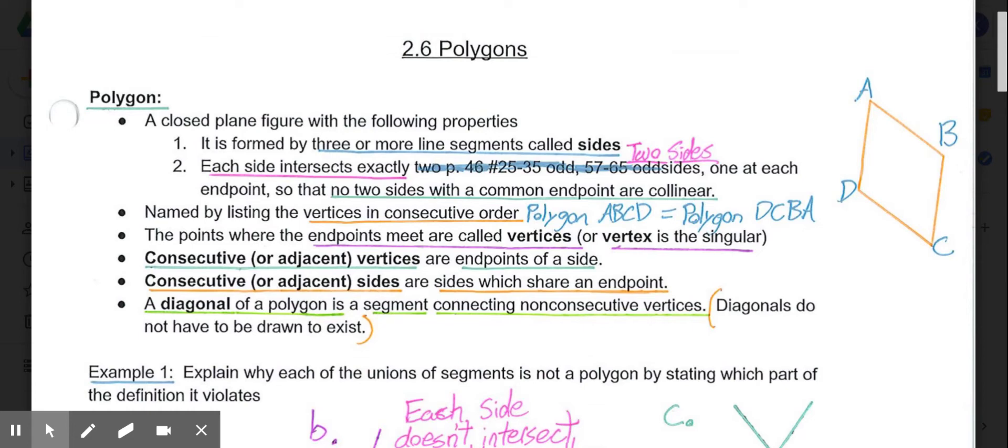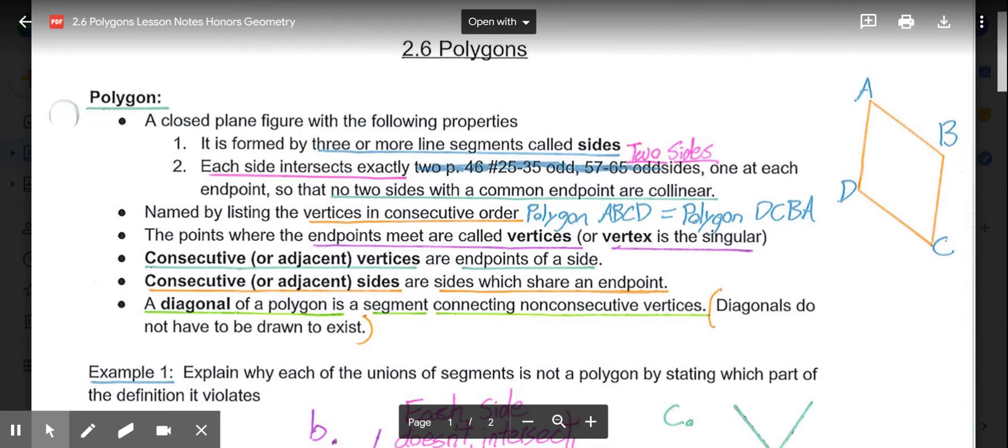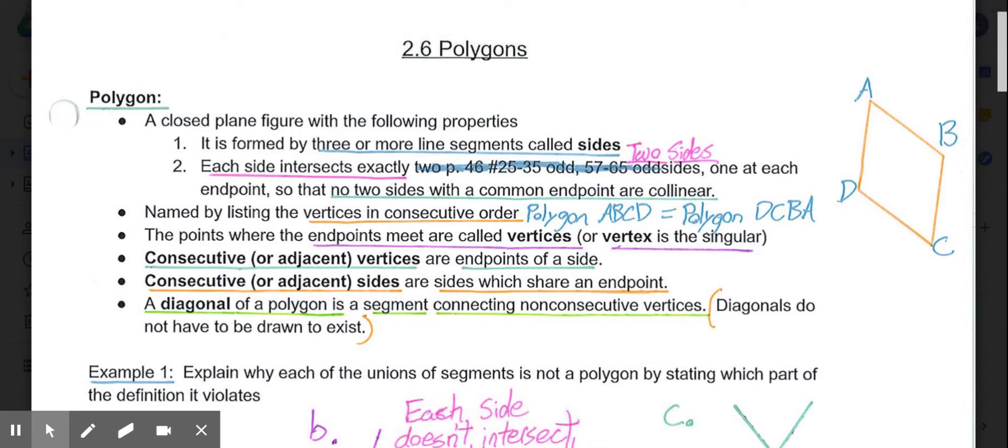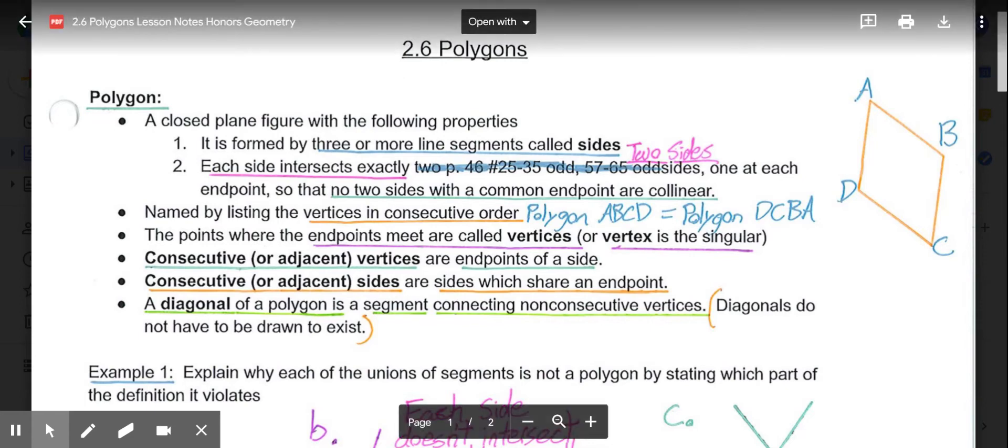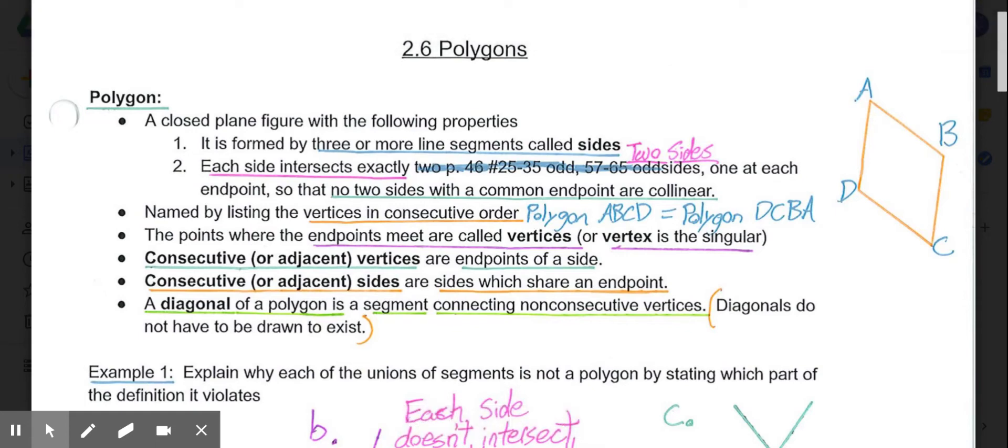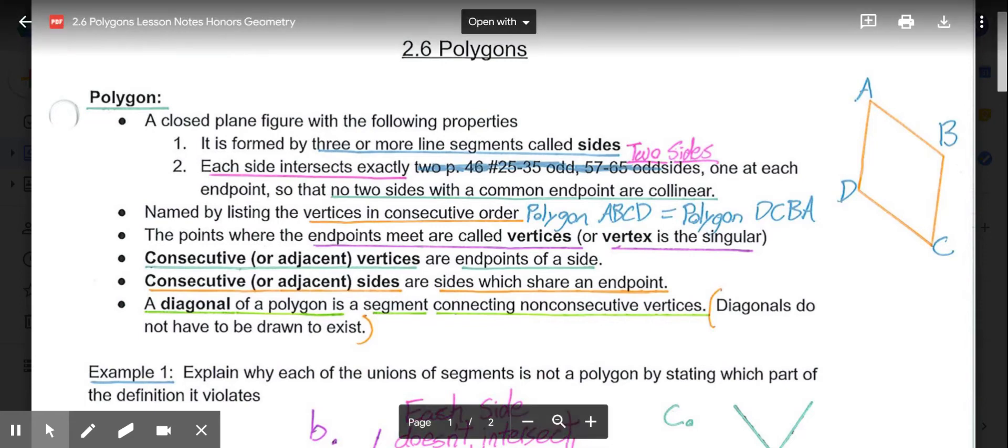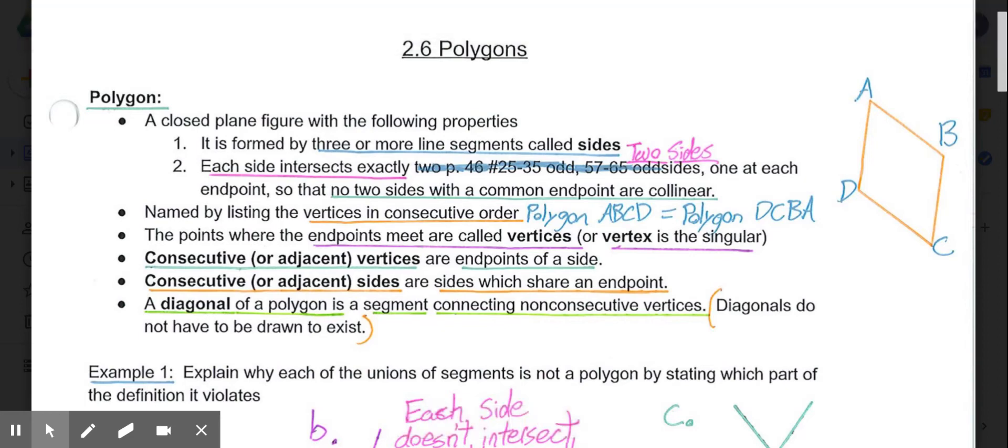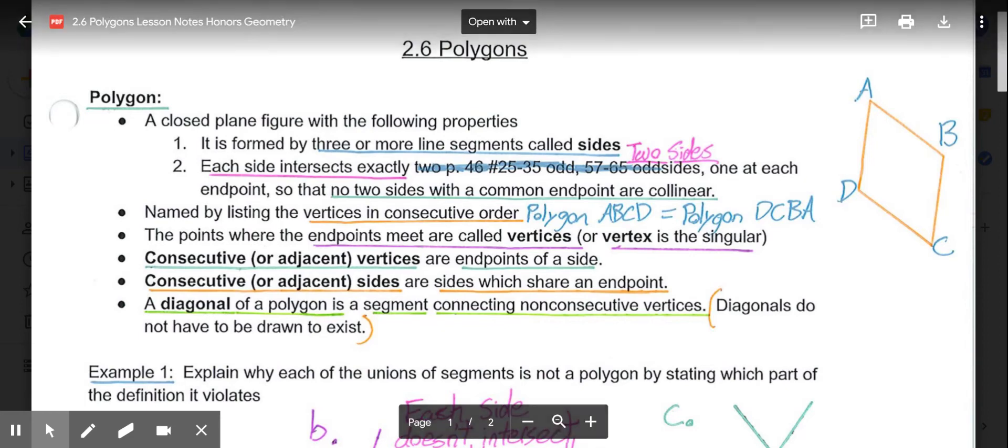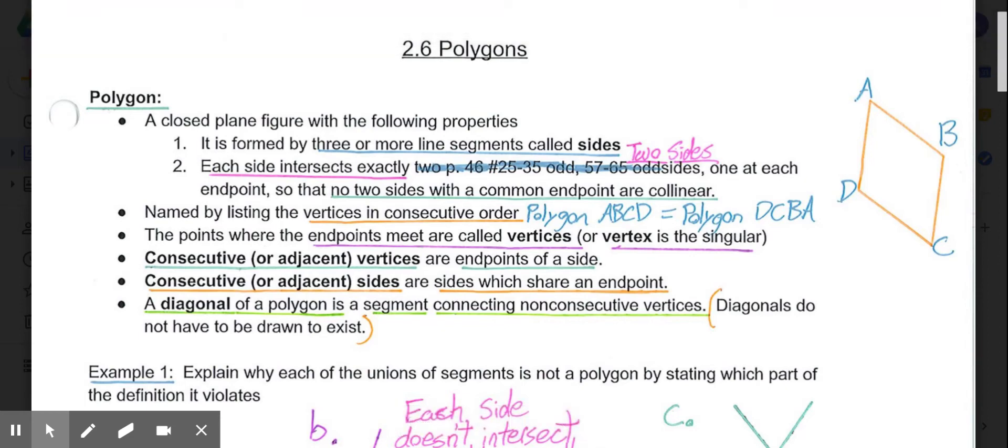Polygons are formed by three or more line segments called sides. Each side intersects exactly two sides, one at each endpoint. And I apologize for, obviously, the unintentional copy and paste in there. So what that should read is, each side intersects exactly two sides, one at each endpoint, so that no two sides with a common endpoint are collinear.